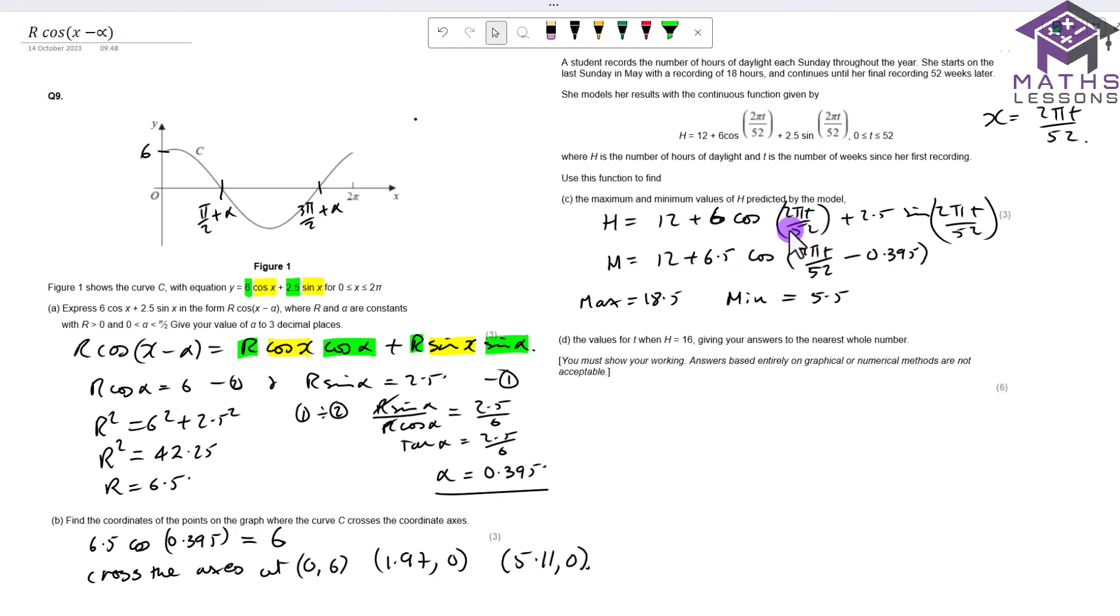So what you need to do is spot this is exactly the same function here, and we can use this trick to just speed things up. Well, you could differentiate it, you could do all sorts of ways of doing it, but this is by far the quickest way using what we've worked out already.